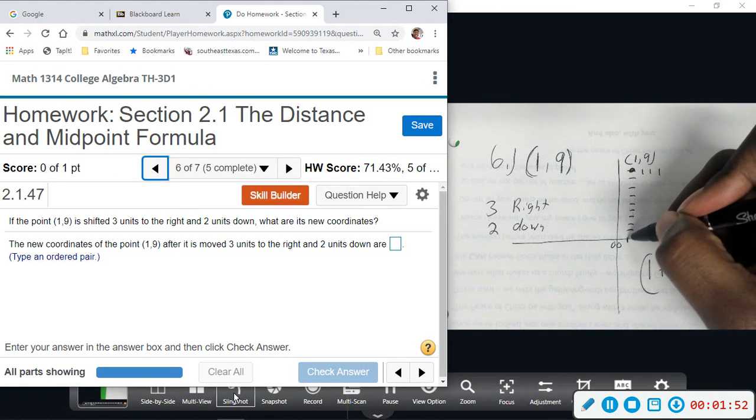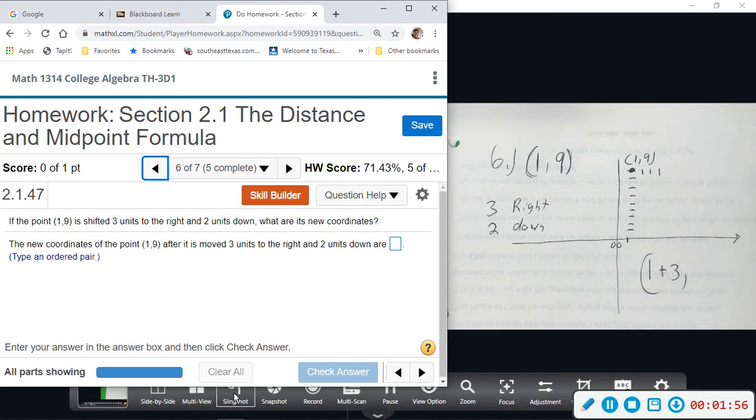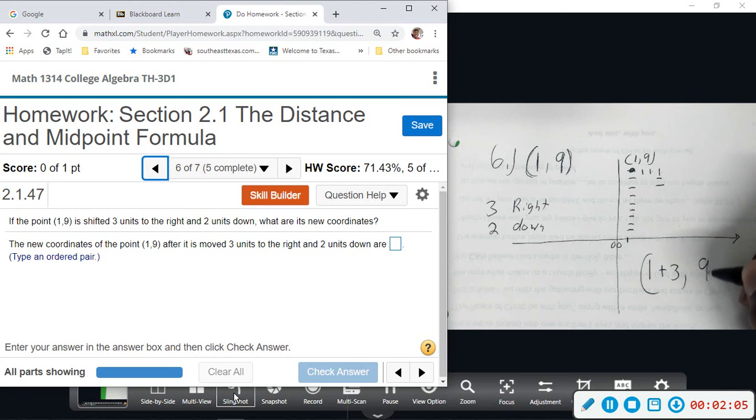We were at 1 and now we're at 2, 3, 4 - adding 3 to the right. And then it wants to go down two units, so down one, two. That would be essentially the same as taking our y-coordinate 9 and subtracting 2 from it. We're going down 2, we're at 9, 8, 7. So this ordered pair should be (4, 7).